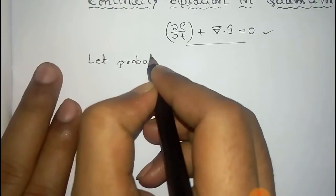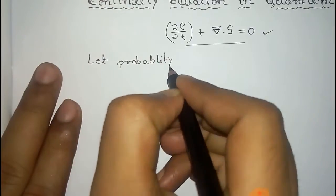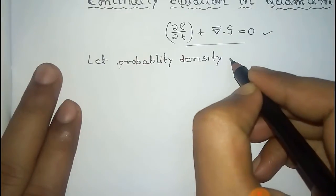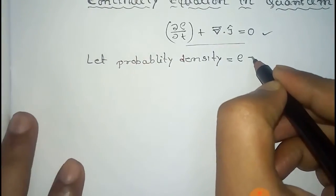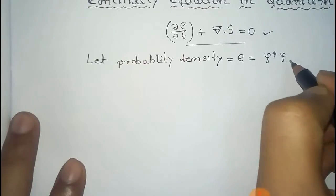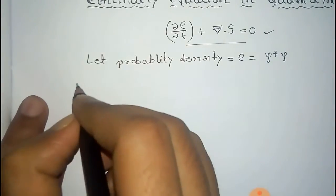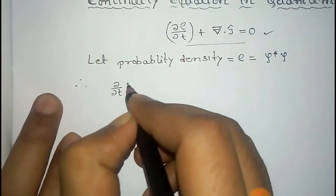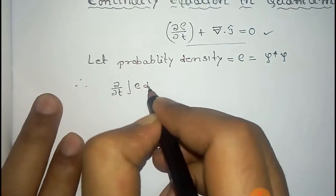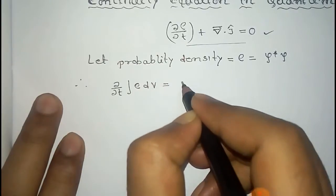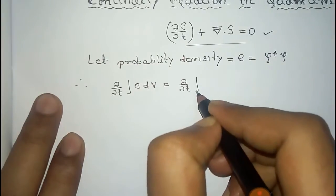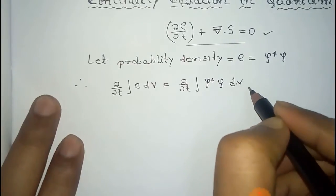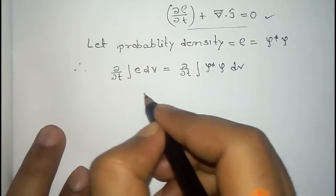Let the probability density ρ be given by ψ* ψ, where ψ is the wave function. From this we get that ∂/∂t of the integral of ρ dV is equal to ∂/∂t of the integral of ψ* ψ dV — the same operation on both sides.